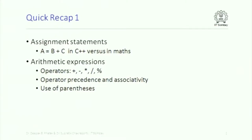Statements like A is assigned B plus C mean two completely different things in C++ as opposed to maths. When you write A, the equal-to symbol and then B plus C, they mean two completely different things. And then there are arithmetic expressions — specifically in lecture 408 we looked at addition, subtraction, multiplication, division, and the remainder operator. That percent sign constitutes integer remainder. We also looked at operator precedence and associativity, and the use of parentheses.